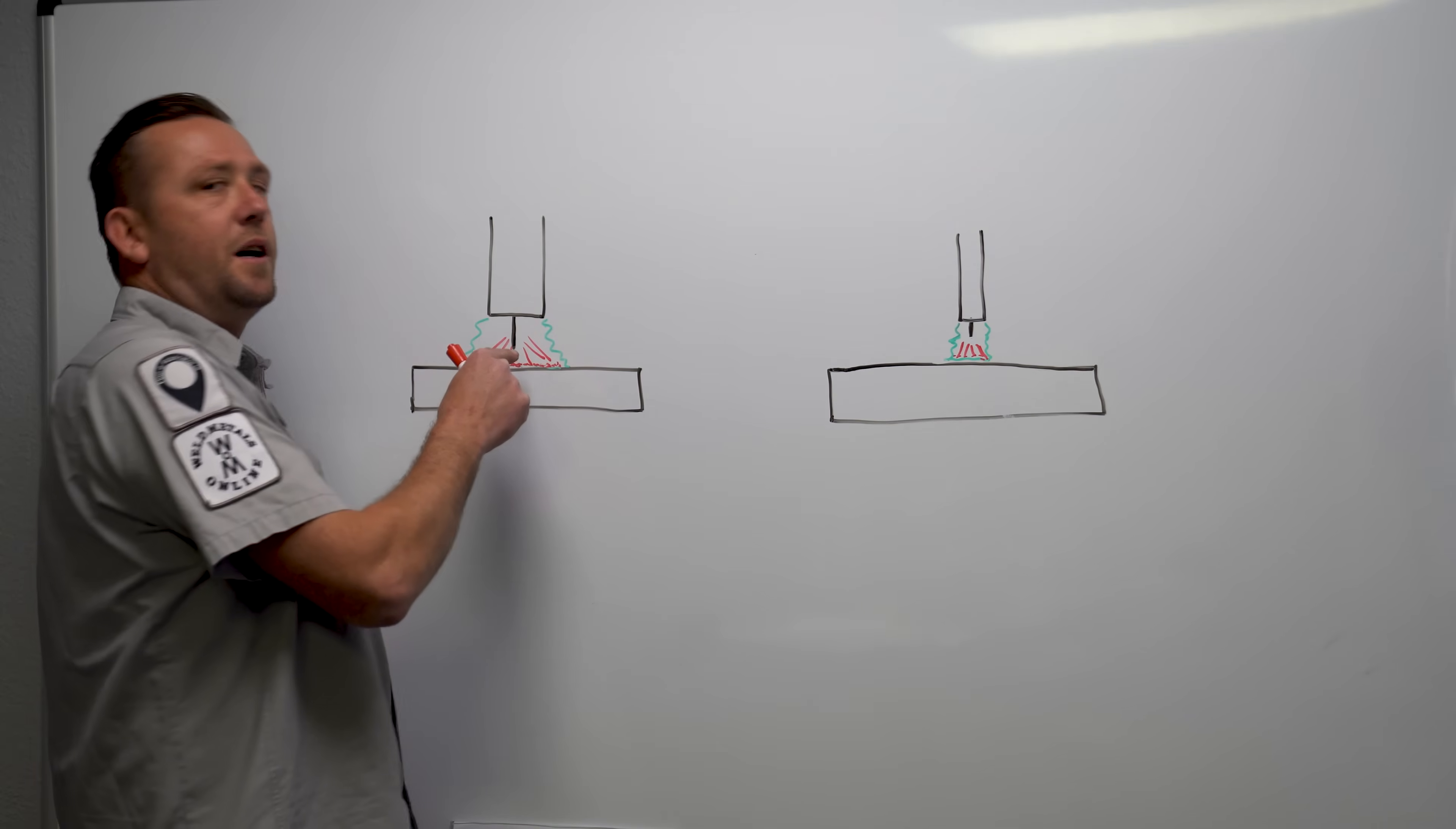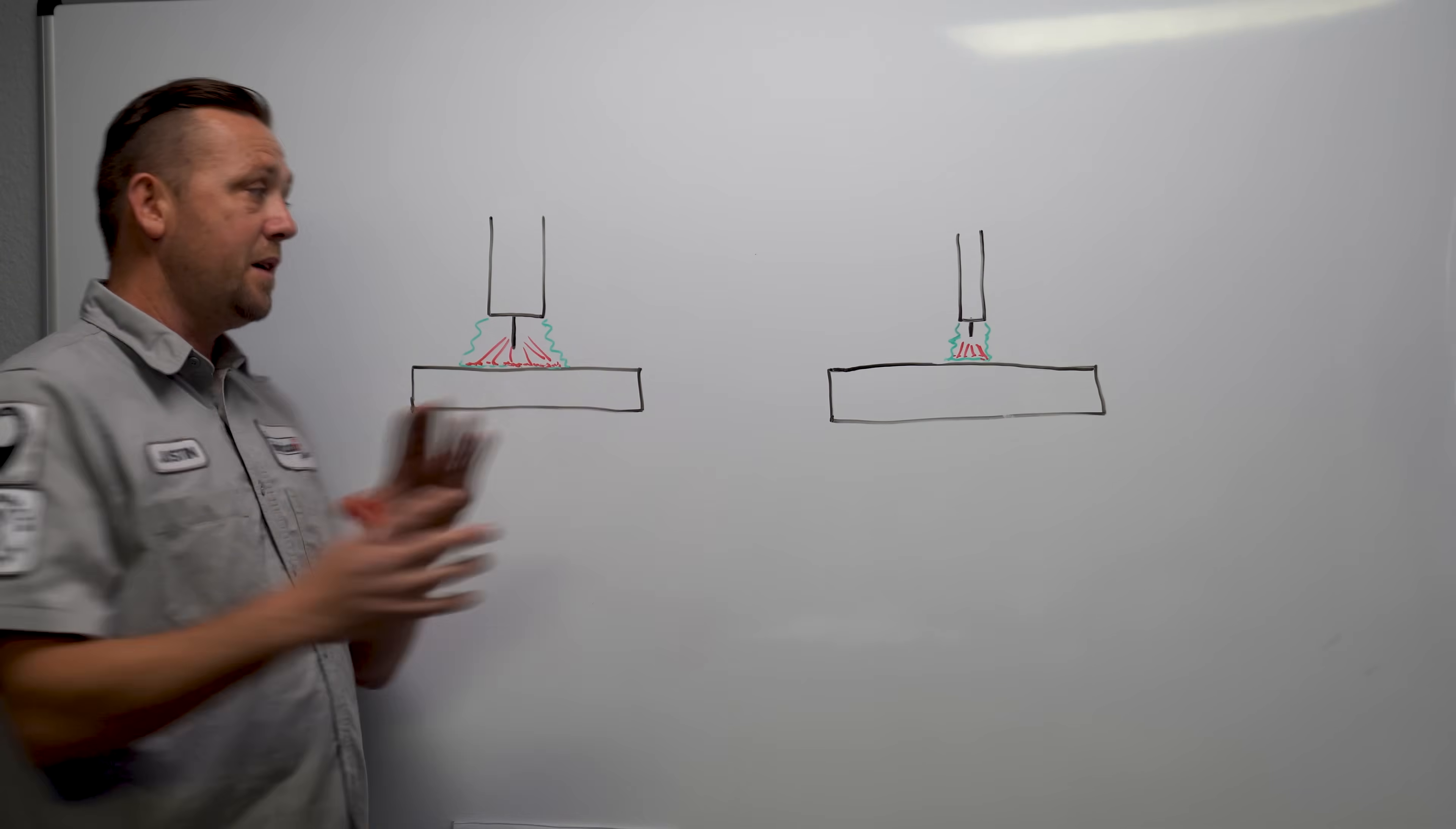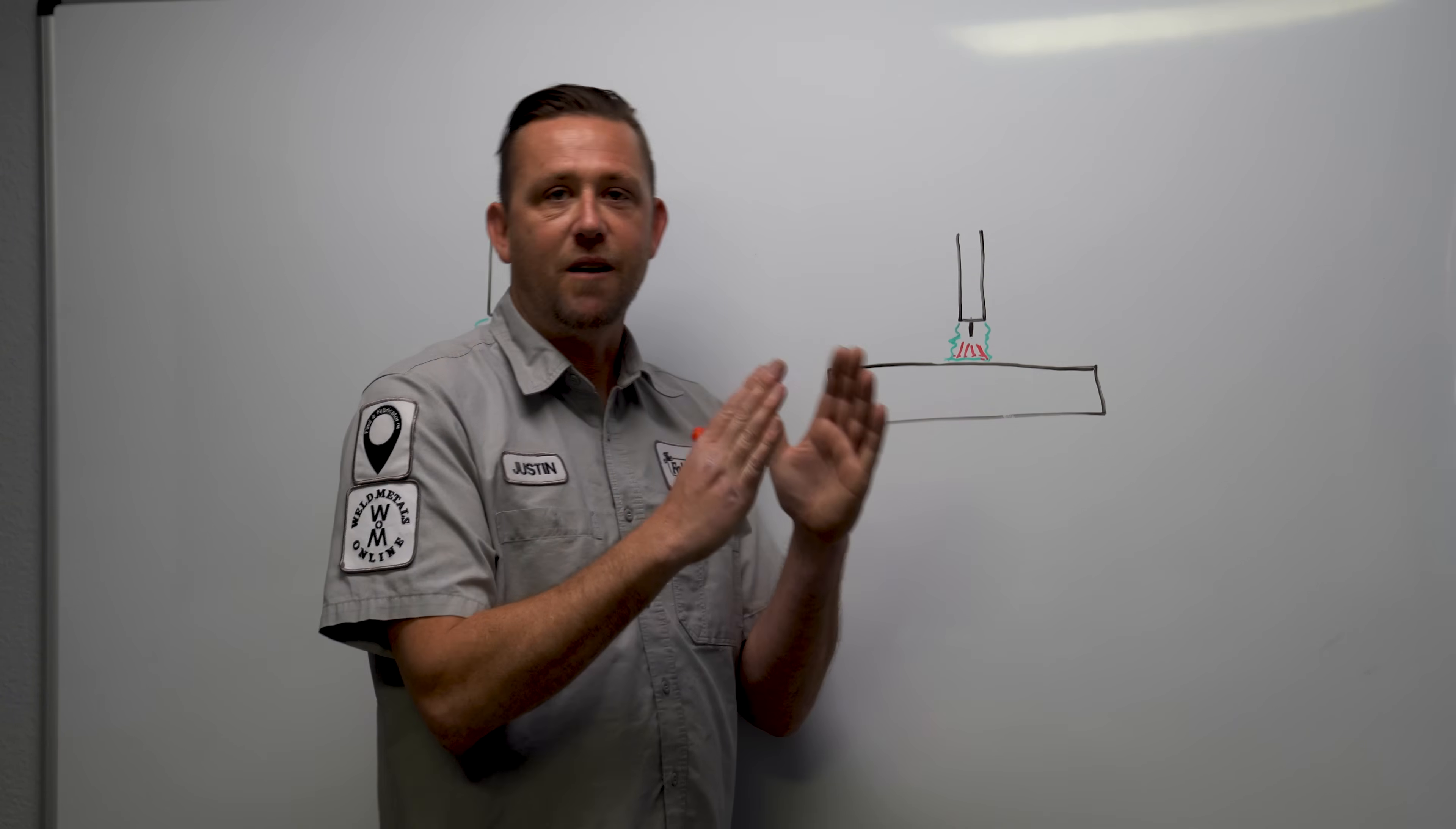So, in short, the larger the cup you have, the more random it becomes because the area the arc can strike becomes a much greater area as opposed to a smaller cup, which is a more narrow and more controlled area.